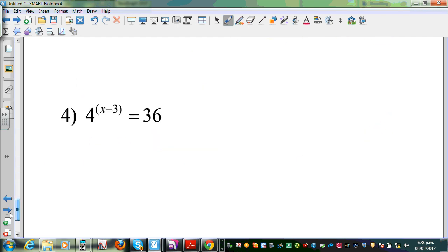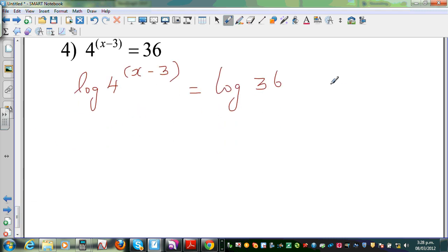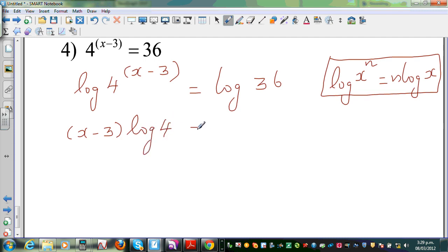Now this is an exponential form. Let us take log of both sides. So I can say log 4 raised to x minus 3 is equal to log 36. I'm taking log of both sides. So using the log rule, this can be dropped down. The rule says log of x to the power n is n log x. You can refer to the log rules. I have made proofs of these rules. So I can say x minus 3 log 4 is equal to log 36.